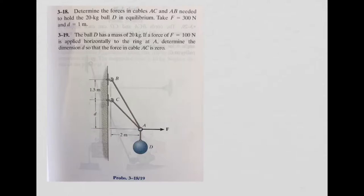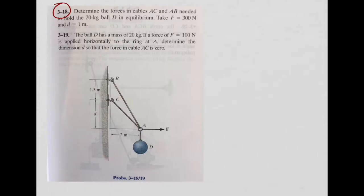Let's do this first example. These examples were taken from the Hibbeler Statics book, which is recommended for this module. The idea of Example 318 is to obtain the forces in cables AC and AB. This structure is holding a weight at point D of 20 kilograms, and there is also a force F of 300 Newtons applied at point A. This is typically a problem of the equilibrium of a particle.